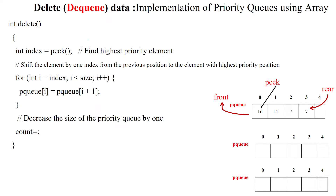The data will be deleted by calling the method delete. This array-based priority queue is having four elements. The first element is accessed using the peek operation, so we get 16. The value 16 is available at index zero. That index is assigned into the variable index, so index equals zero.